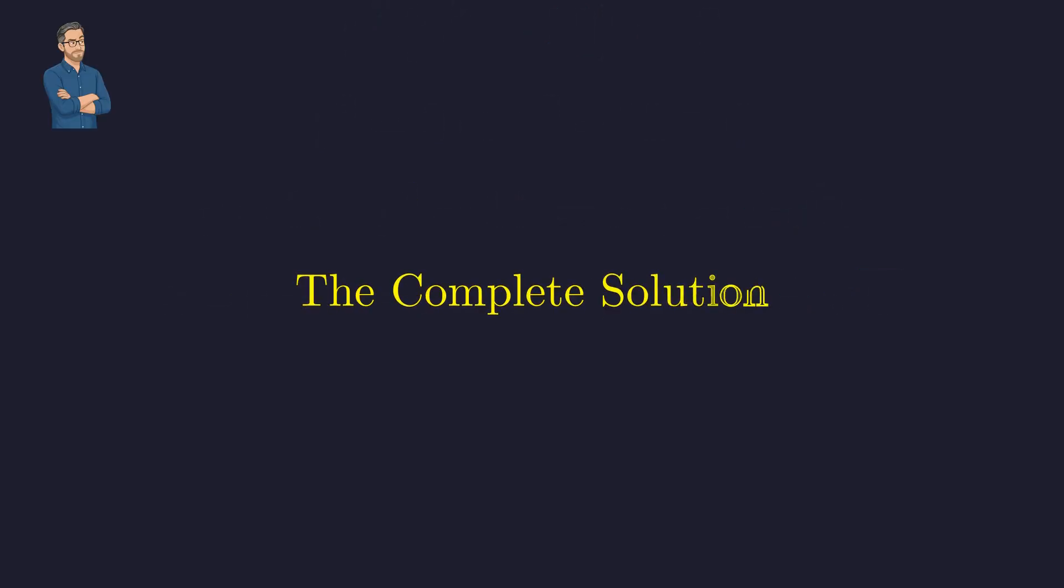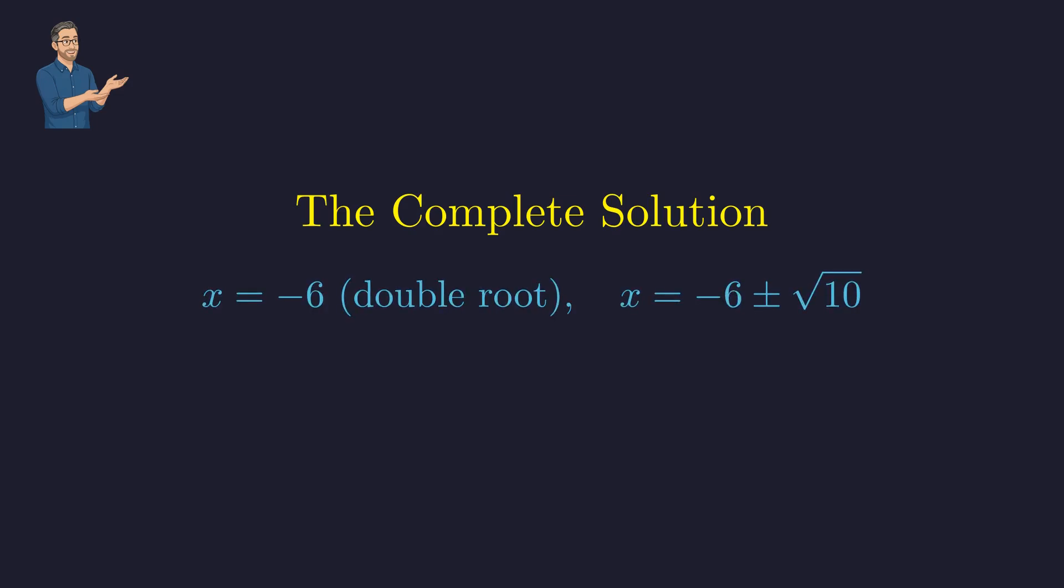Let's summarize our complete solution set. Distinct real solutions. Counting multiplicity, x = -6 is a double root, so there are four roots total.